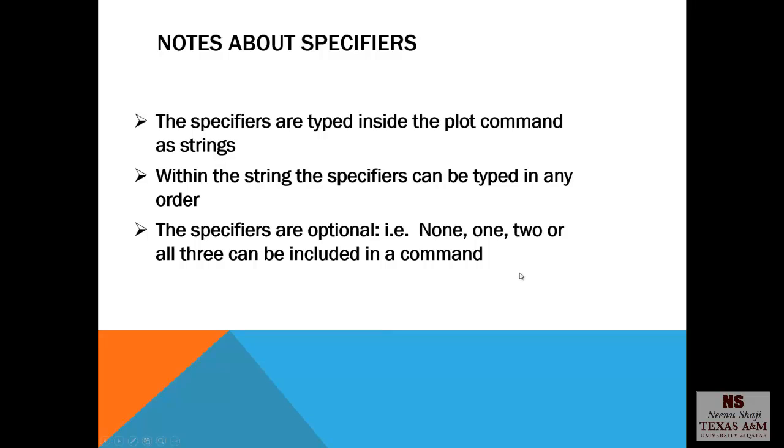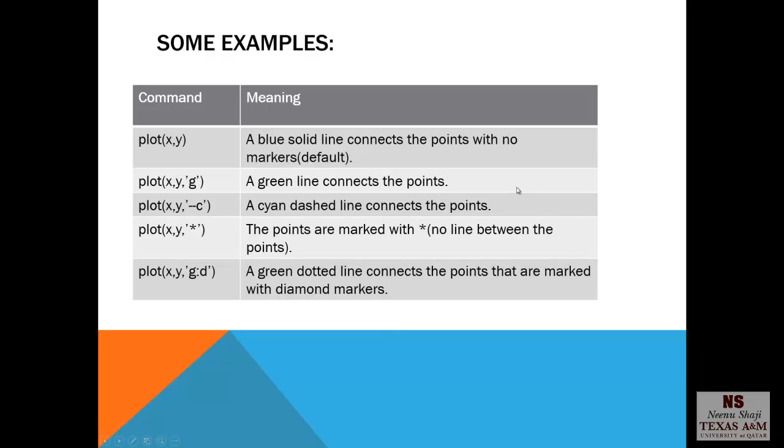Here are some examples of the various plot commands. Plot x,y as green, line connects the points. Plot x,y as a double dashed line, which connects the points as a cyan dashed line. Plot x,y asterisk, the points are marked with asterisk, so there is no line between the points. Plot x,y g colon d, so it's a green dotted line connecting the points that are marked with diamond markers.